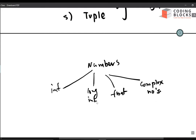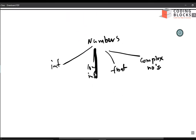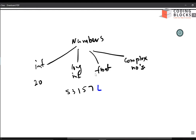Integers you already know — for example, 20. Long integers are big numbers like 531, 57, and they are terminated by an 'L' sign. Floating point numbers are like 20.5, 31.5, 31.0, and so on. Complex numbers are written in the form 5+3j, or 6.6+2j.